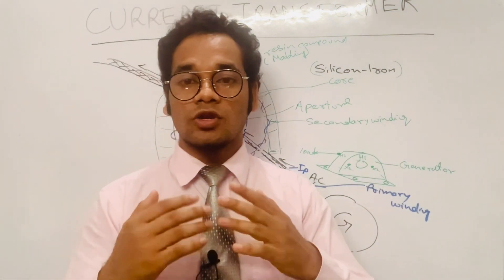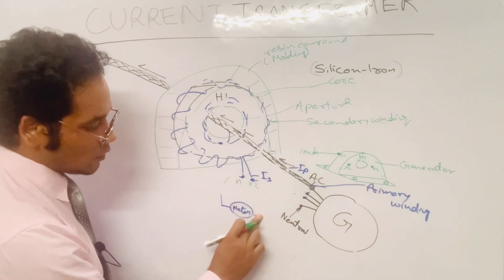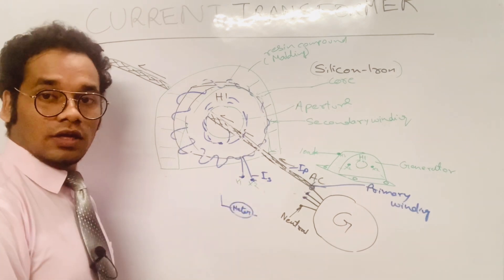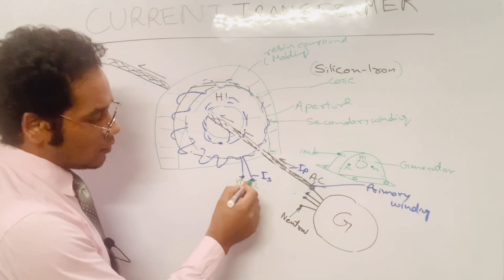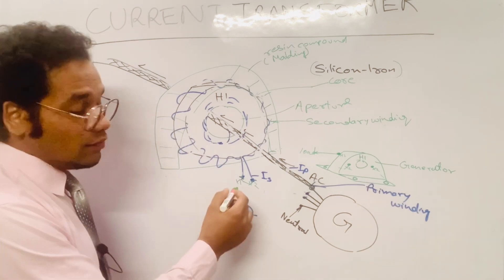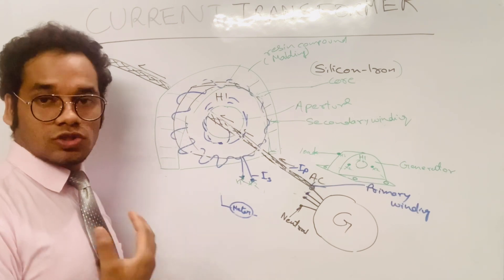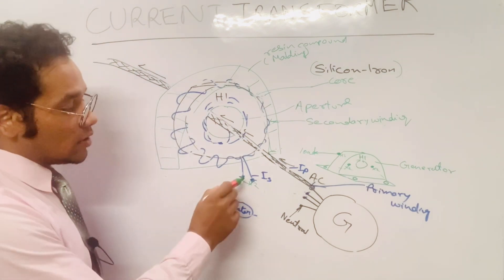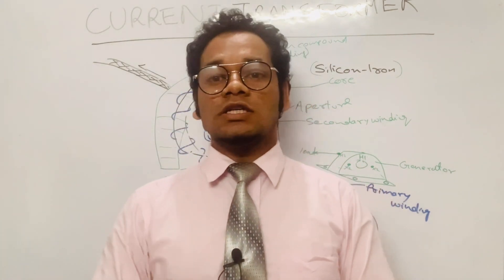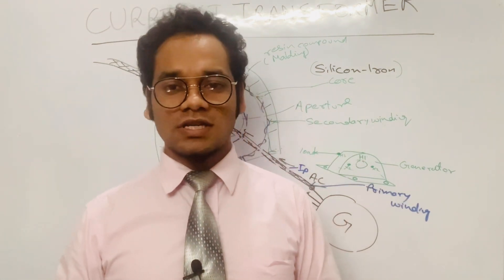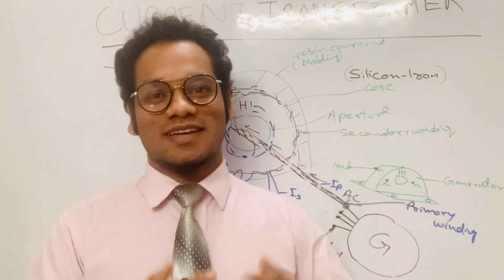One important safety point: suppose the current transformer has been disconnected from its circuit. Make sure that the two terminals X1 and X2 are shorted together — joined by a conductor. If you don't connect both terminals and anyone touches them, they can get a severe electrical shock, which is very dangerous. So the terminals of the current transformer must be connected together whenever it is removed from the circuit.